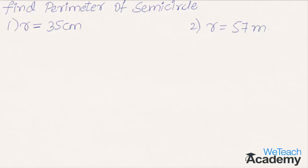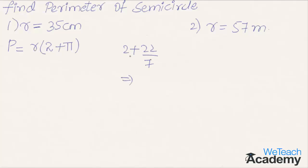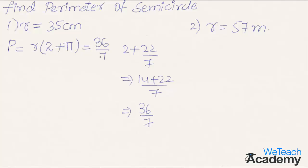Coming to the first one where radius equals 35 centimeters — we already know that the perimeter of a semicircle is given by the formula r into (2 plus pi). Let us find the value of 2 plus pi: that is 2 plus 22/7, which gives us (14 plus 22) divided by 7, equal to 36 by 7. So the perimeter of a semicircle can also be written as 36/7 into r.